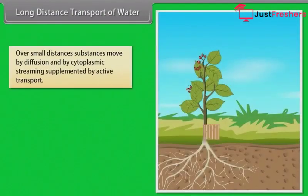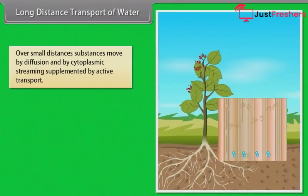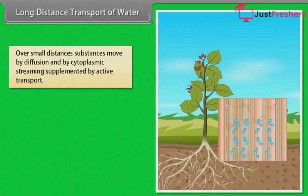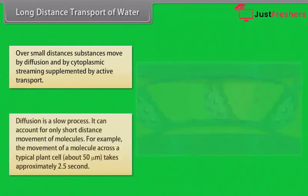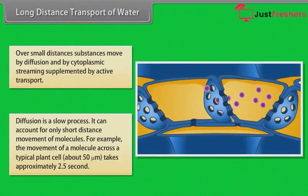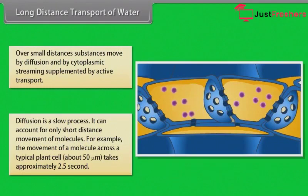As we all know, over small distances, substances move by diffusion and by cytoplasmic streaming, supplemented by active transport. Long distance transport of substances within a plant cannot be by diffusion alone. Diffusion is a slow process and can account for only short distance movement of molecules. For example, the movement of a molecule across a typical plant cell takes approximately 2.5 seconds.